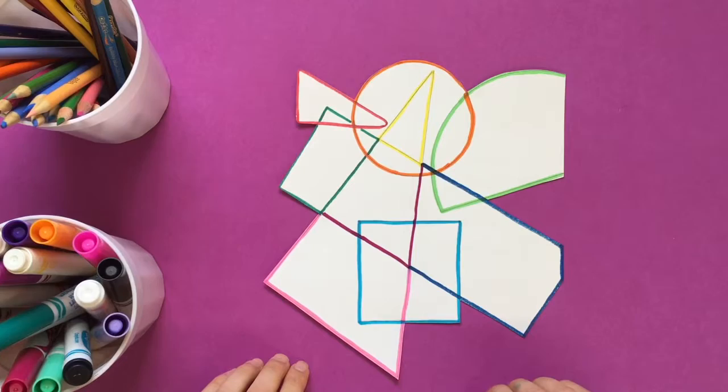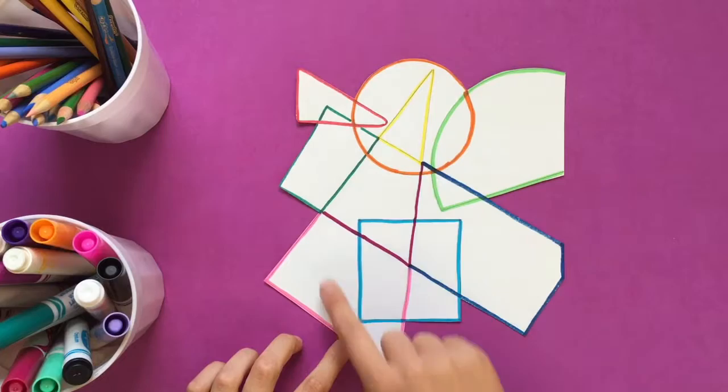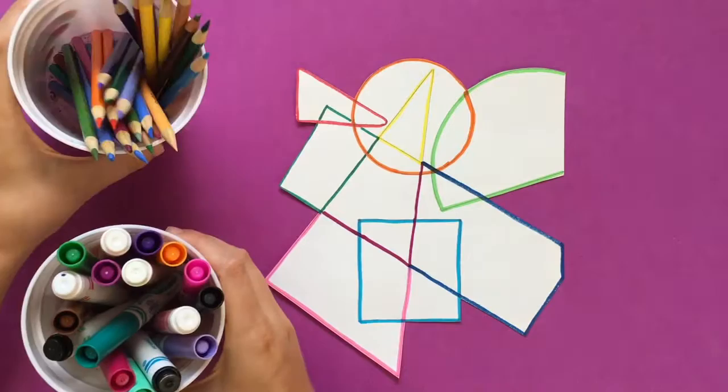Last time in art, you looked at artwork by Frank Stella and created a drawing using organic shapes, geometric shapes, or both. Today you're going to be using markers and colored pencils to color in some of the shapes in your drawing.